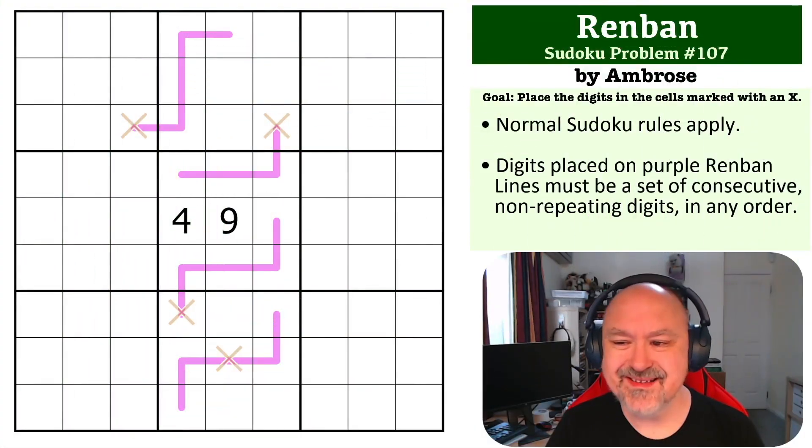Hey everyone, this is Bremster, and this is number 107 in the Sudoku Problems series. This is a Renban problem by Ambrose.